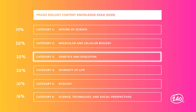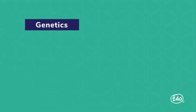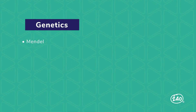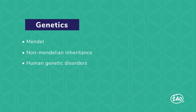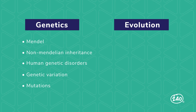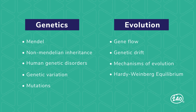Category 3 covers genetics and evolution. For genetics, you'll need to know Mendel's laws of inheritance, but also sex-linked inheritance, codominance, polygenic inheritance, human genetic disorders, causes of genetic variation, and mutations. For evolution, you'll need to know gene flow, genetic drift, mechanisms of evolution like natural selection, the Hardy-Weinberg equilibrium, and evidence for evolution.